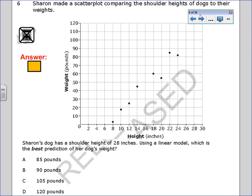Sharon made a scatter plot comparing the shoulder height of dogs to their weight. Sharon's dog has a shoulder height of 28 inches. Using a linear model, what is the best prediction of her dog's weight?